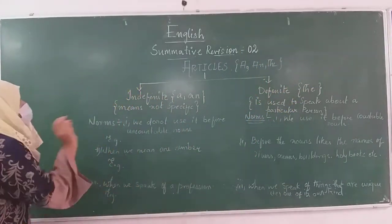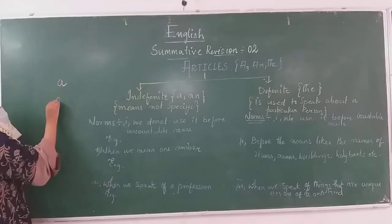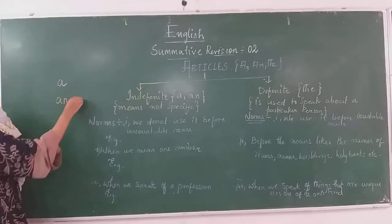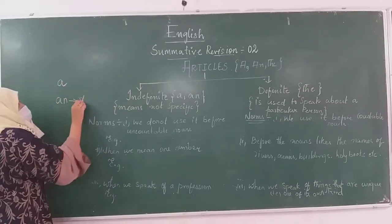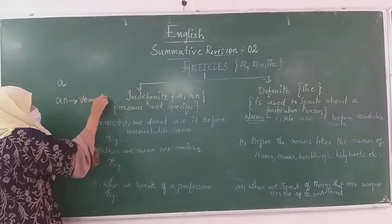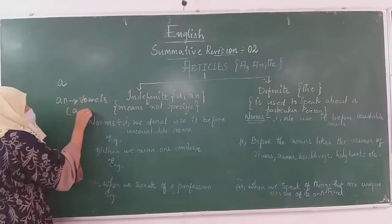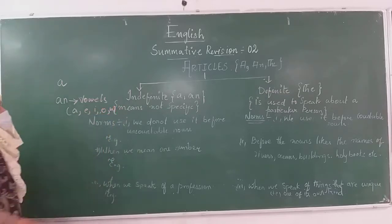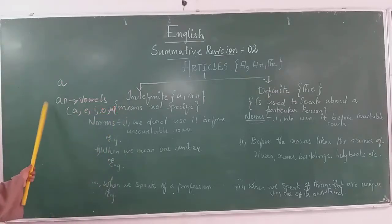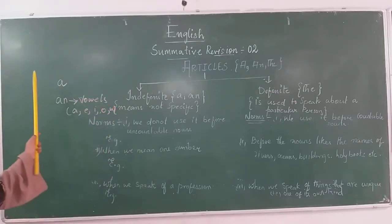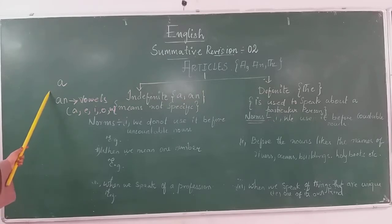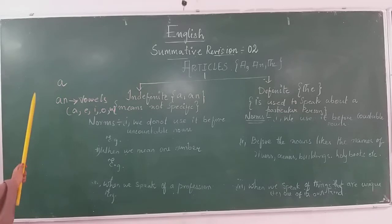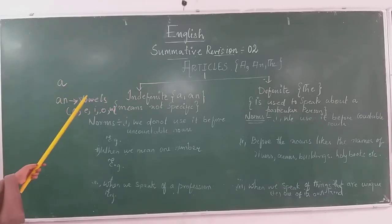Now, when to use A and when to use AN. AN is used in front of vowels — that is, A, E, I, O, U. So AN is used in front of vowels, whereas A is used in front of consonants.